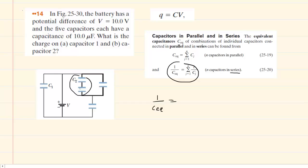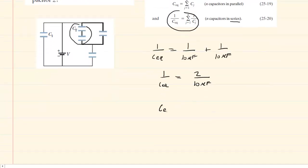Since each of these capacitors has a capacitance of 10 microfarads, we would have 1 over 10 microfarads plus 1 over 10 microfarads. On the right-hand side, we add them together to get 2 over 10 microfarads. If we reciprocate both sides, the equivalent capacitance is equal to 10 microfarads divided by 2, which simplifies to 5 microfarads.